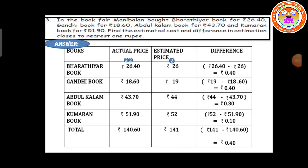Third problem: In the book fair, Manibalan bought a Bharatiyar book for 26 rupees 40 paise, Gandhi book for 18 rupees 60 paise, Abdul Kalam book for 43 rupees 70 paise, and Kumaran book for 51 rupees 90 paise. Find the estimated cost and difference in estimation closest to nearest 1 rupee. Now we have to find the estimated price for the given actual prices and find the difference in estimation. Is it clear, students?